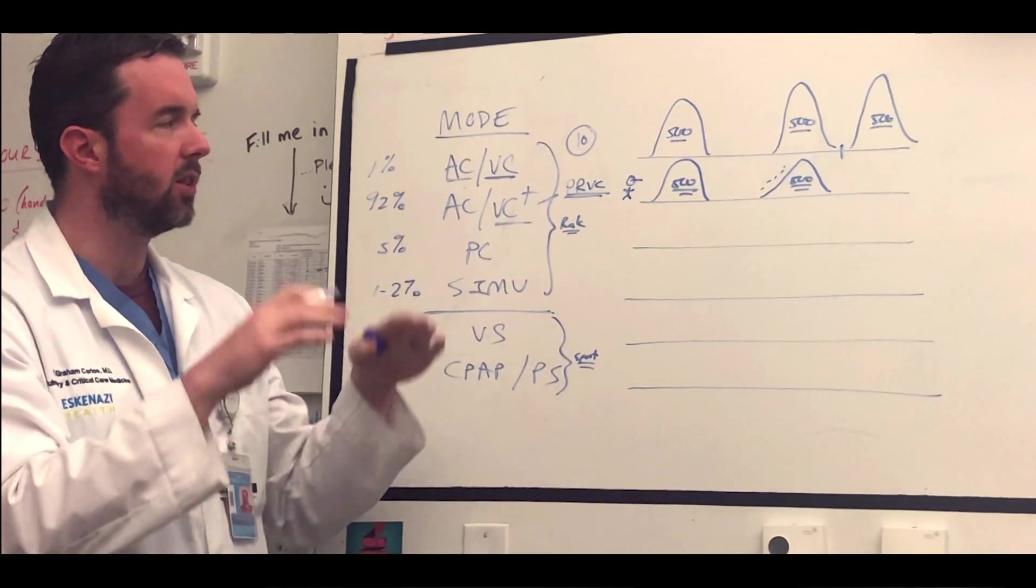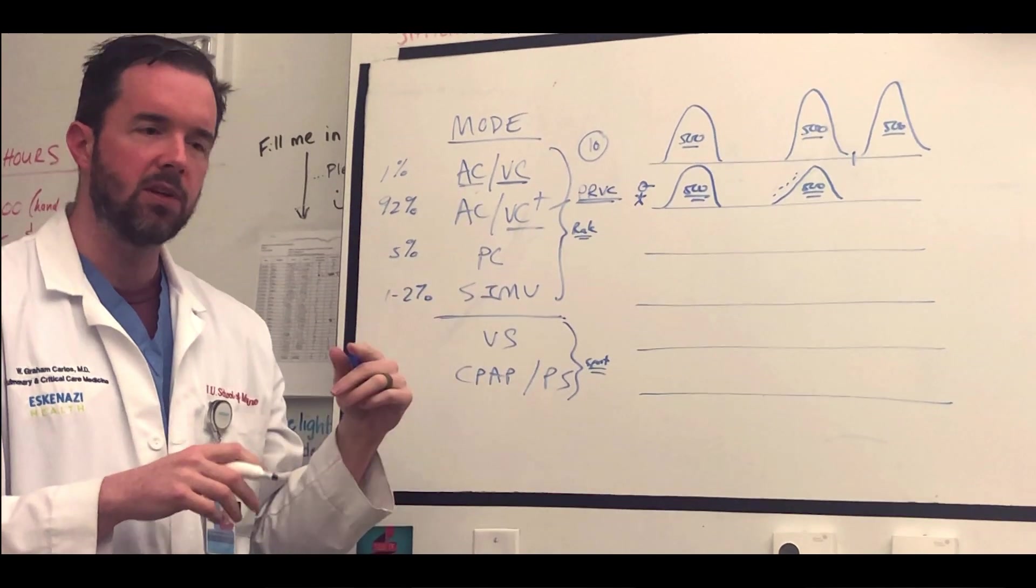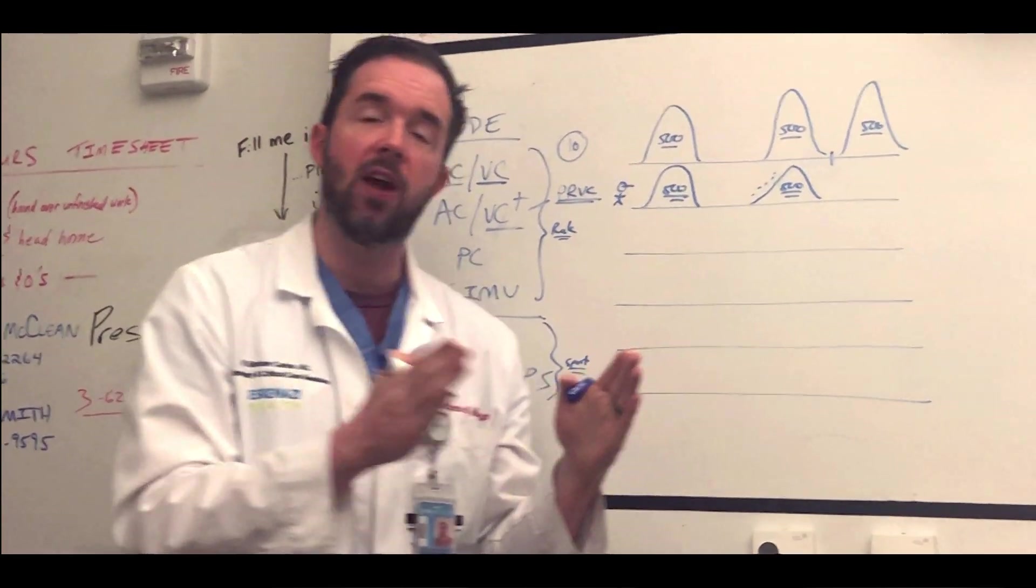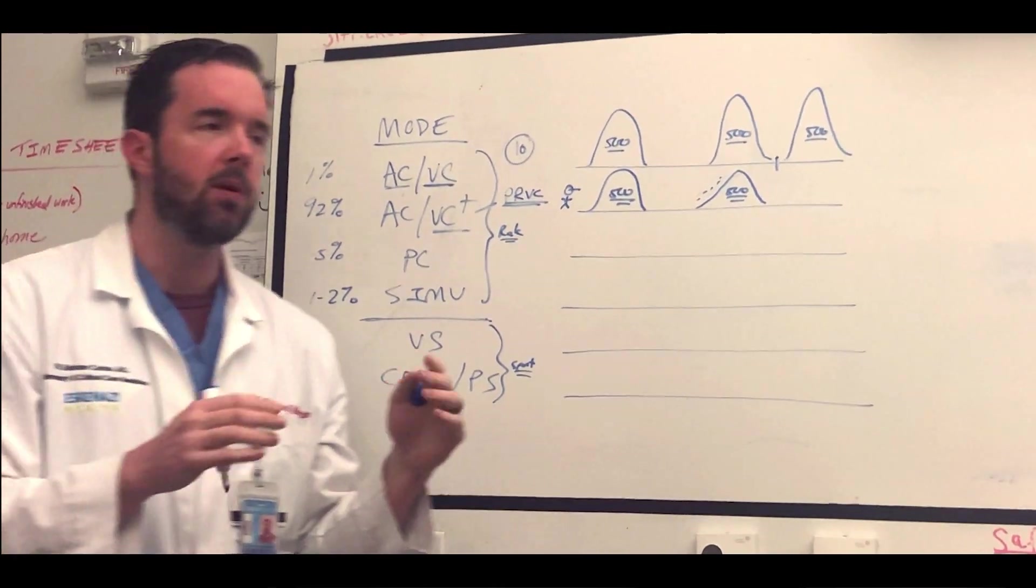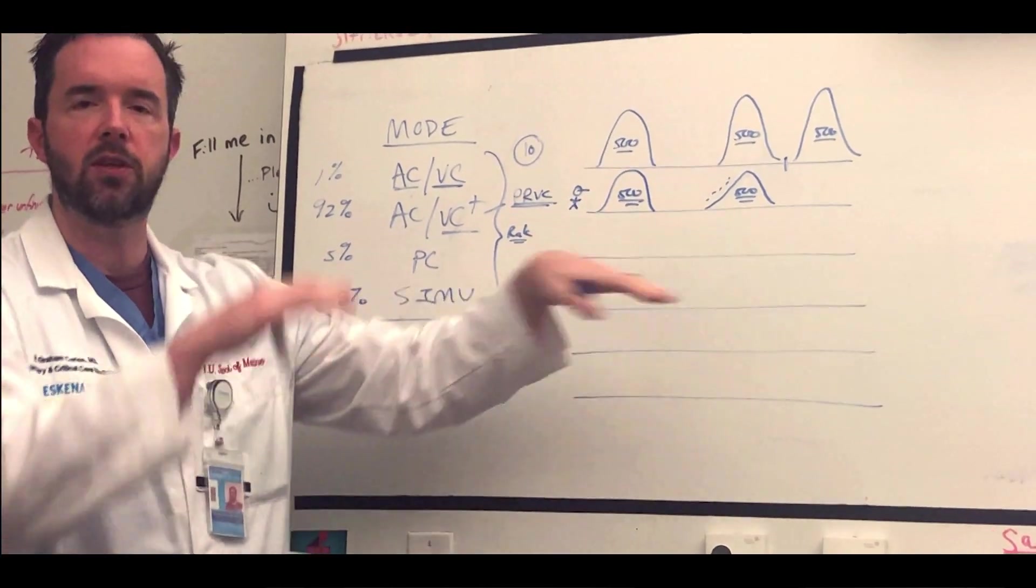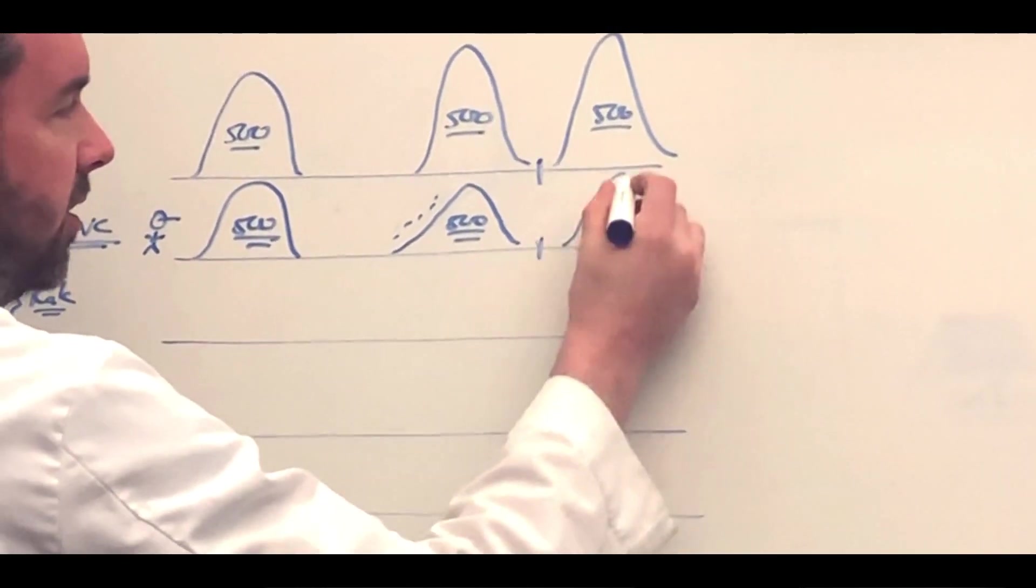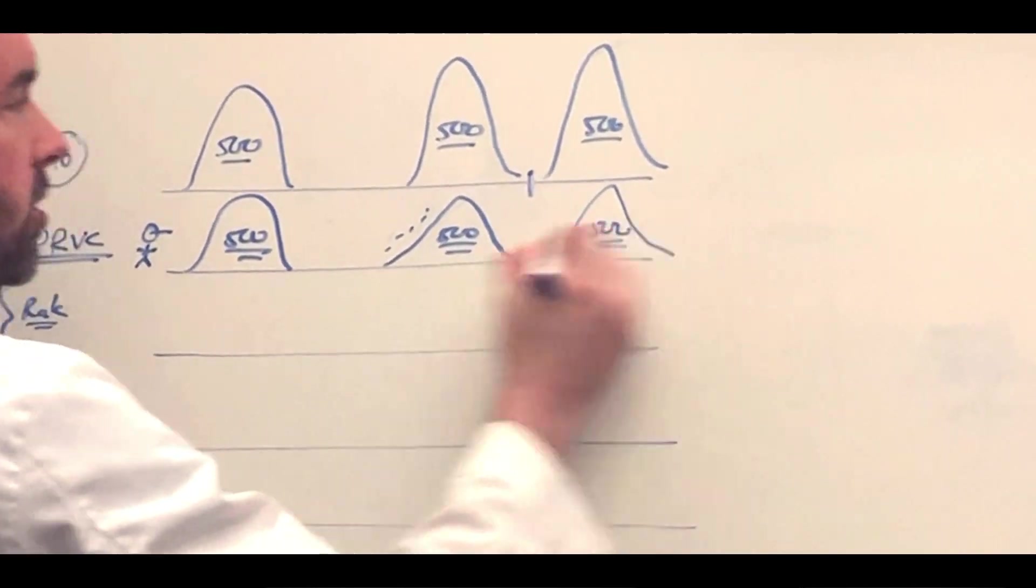In many ways, people call it kind of a pressure targeting mode because we're trying to get the 500 at the lowest pressure possible. In ACVC plus or PRVC, you'll see the tidal volumes vary a bit from breath to breath because again, the ventilator is making small adjustments in order to achieve 500 at the lowest pressure possible. If the patient takes an extra breath, they're going to get that extra 500 just like above.